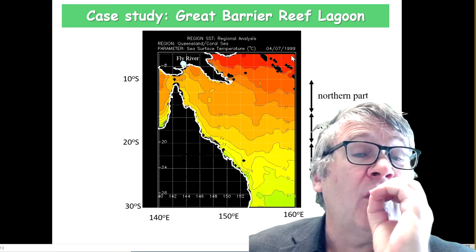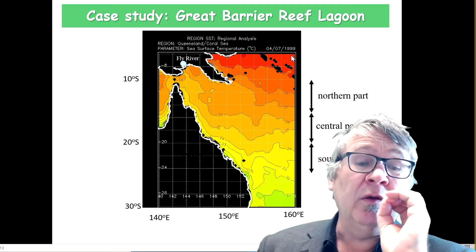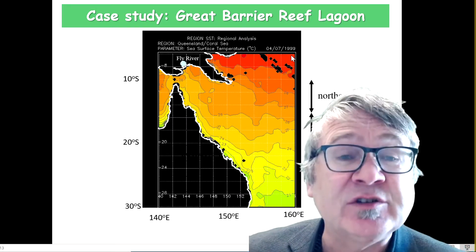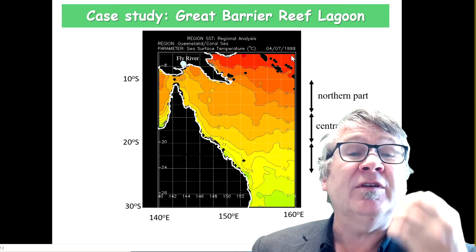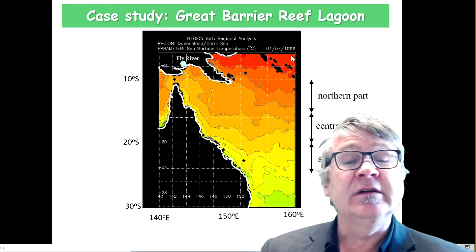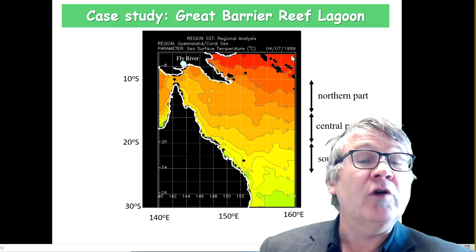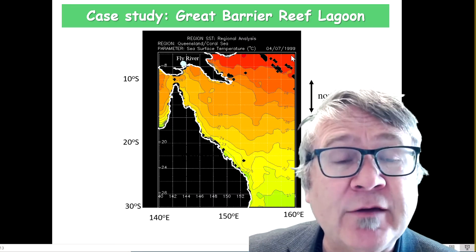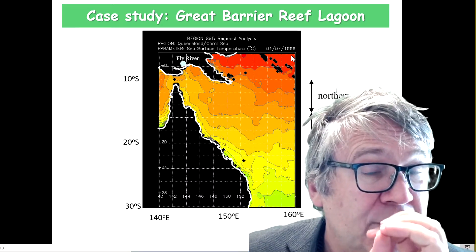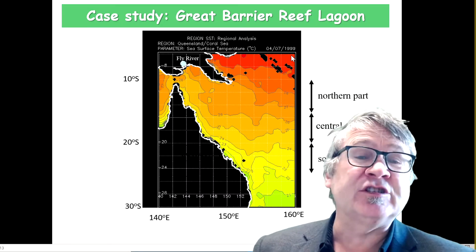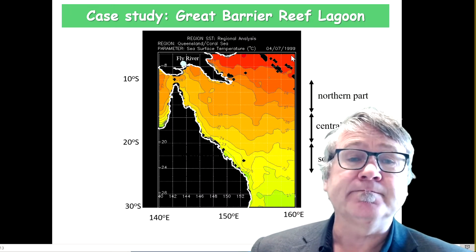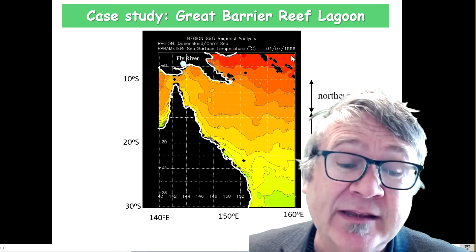Near the coast, you also see some variations that are actually associated with currents, with boundary currents, that also influence the temperature value. Plus you have the shallow water effect — variations because the shallower water can heat up faster during summertime and cool down faster during wintertime.